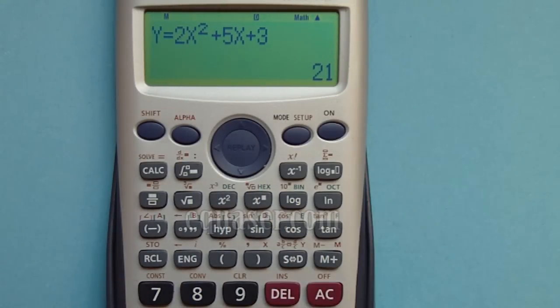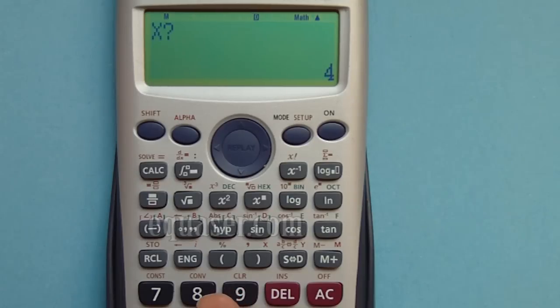Now if you want to do it for 4, you press equal sign and then press 4 - result is 55. Again for another value, I just press equal sign, simple as that. It asks me to enter, let's say I want to enter 10.